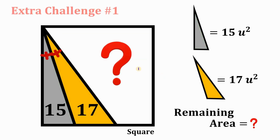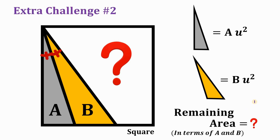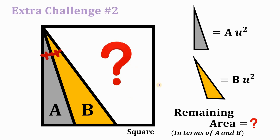Here's an extra challenge: given a similar figure, the gray region is 15 square units and the yellow region is 17 square units — what is the remaining area? For extra challenge number two, the gray region is a square units and the yellow region is b square units — find the remaining area in terms of a and b. Leave your answers in the comments below.